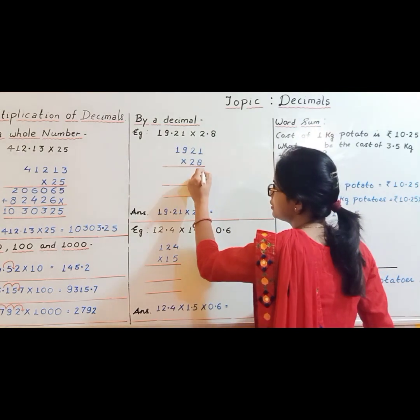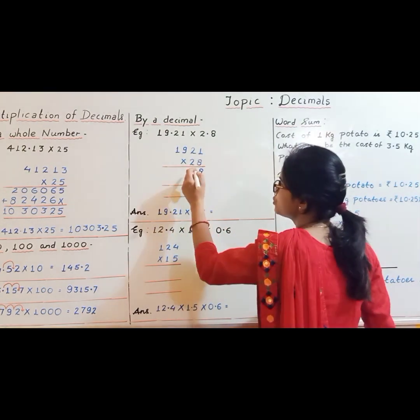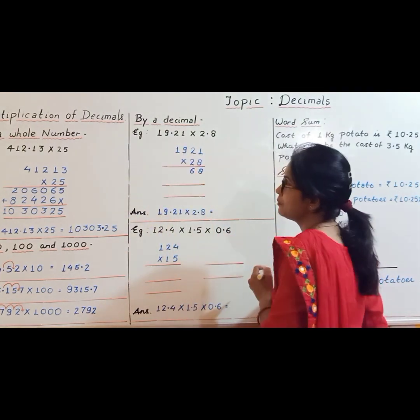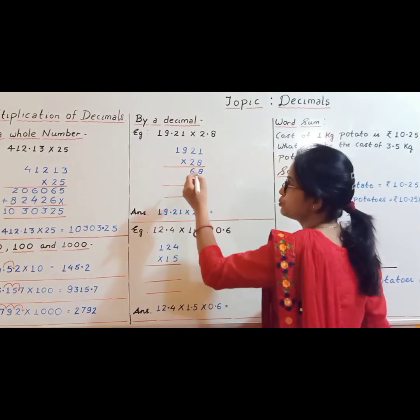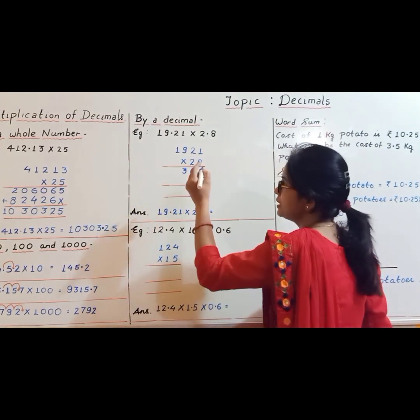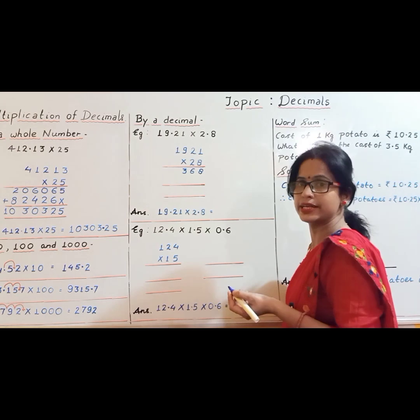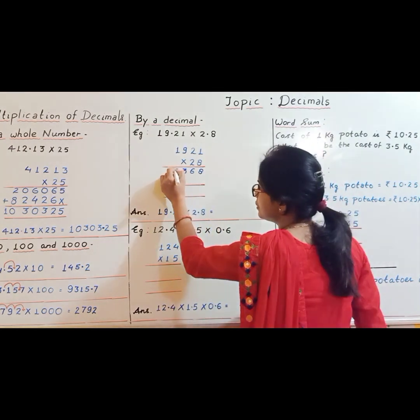Do the multiplication: 8 ones are 8, 8 twos are 16 carry 1, 8 nines are 72 plus 1 is 73 carry 7, 8 ones are 8 plus 7 is 15.